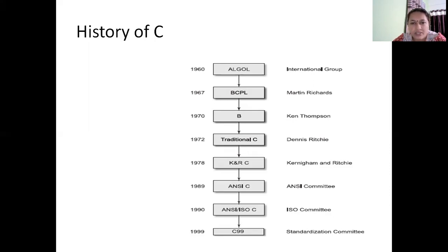BCPL came in 1967. After a few years, in 1970, Ken Thompson developed a language called B. B used the features of BCPL and Algol, and it was better than the previous two.